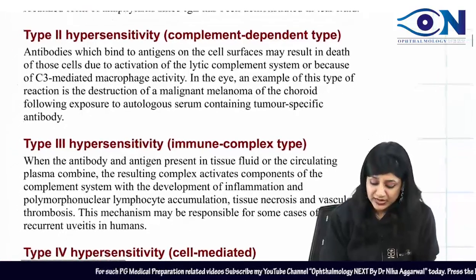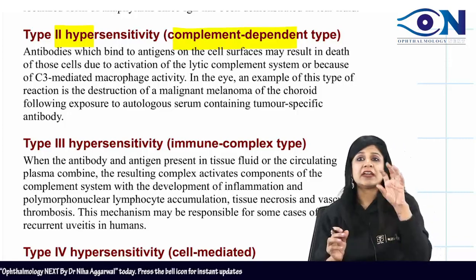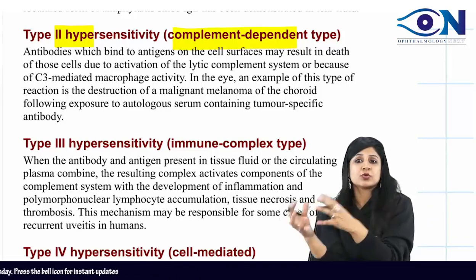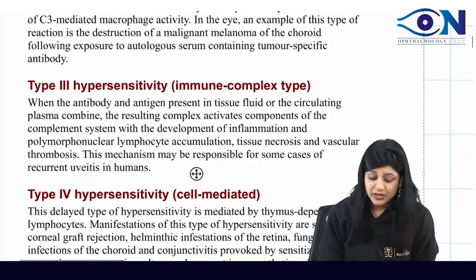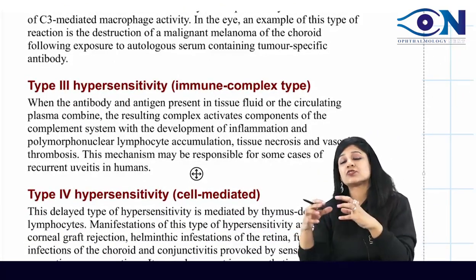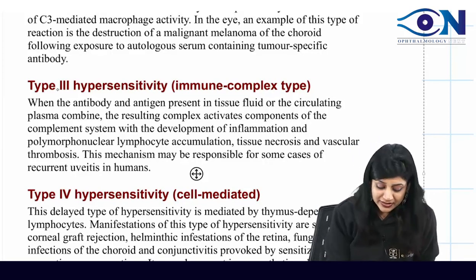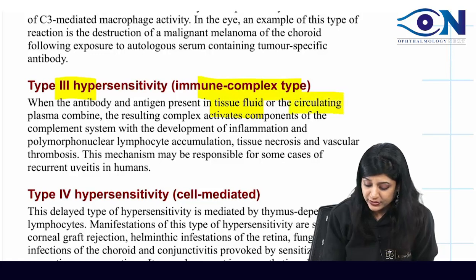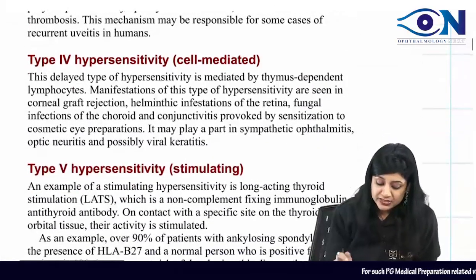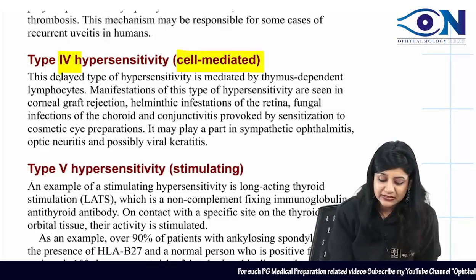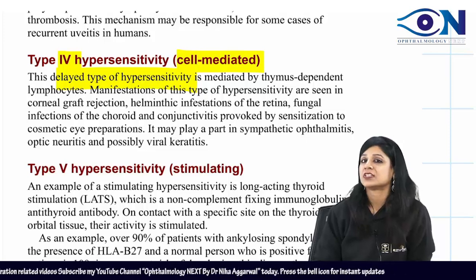Type 2 reactions are complement mediated when antibodies and antigens combine, forming immune complexes. Type 3 is when these immune complexes are circulating in the systemic circulation or present in the tissue fluid. Type 4 is the cell-mediated delayed type of hypersensitivity reaction. In the eye, we have different kinds of allergic conjunctivitis.